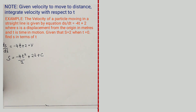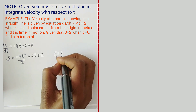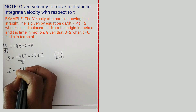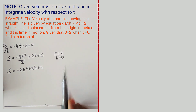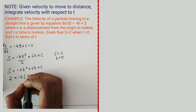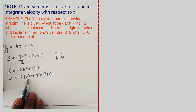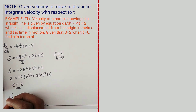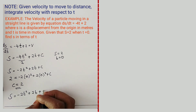We have been given S = 2 and t = 0. To find the constant of integration we substitute into S = −2t² + 2t + C. So 2 = −2(0)² + 2(0) + C. That gives −2×0 = 0 and 2×0 = 0, so C = 2. Therefore our displacement equation is S = −2t² + 2t + 2.